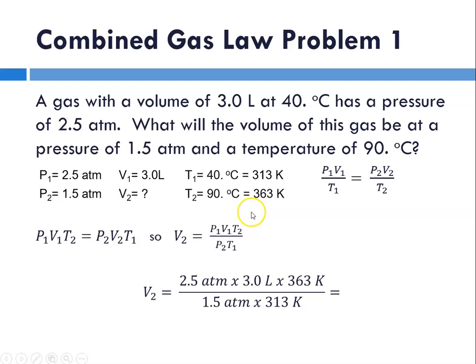Now for these types of problems, it's super important that your units are the same. So atmospheres and atmospheres, liters will solve for liters, temperature converted to Kelvin. So when you plug all this into your calculator, it's going to be 2.5 times 3.0 times 363 divided by 1.5 divided by 313. We're going to cancel our units, and the number that our calculator gives us is 5.7987. Now going back to the original problem, we had two significant digits. So the 9 would be our second significant digit. We would have to round up, so that would give us 5.8.